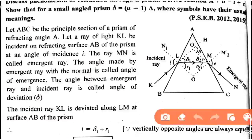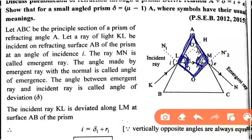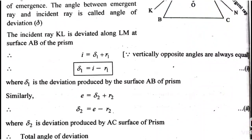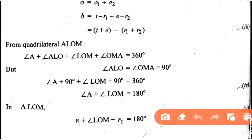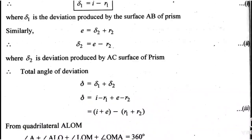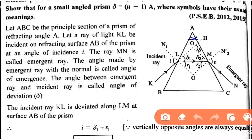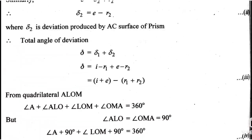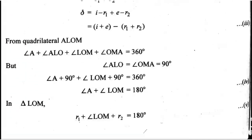After solving equation 3, we choose quadrilateral ALOM. The sum of 4 angles of a quadrilateral is 360 degrees. Two of those angles are 90 degrees each (at the prism surfaces), so 90 + 90 = 180. Therefore, angle A plus angle O equals 180 degrees.